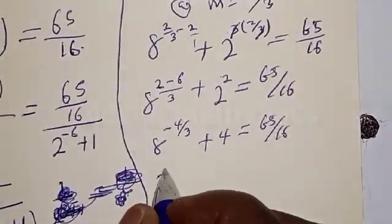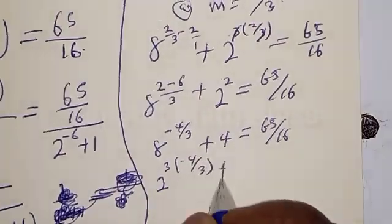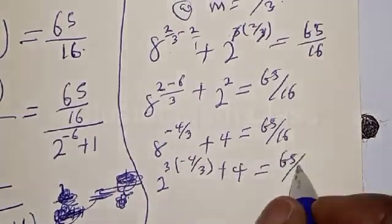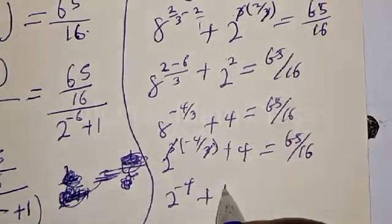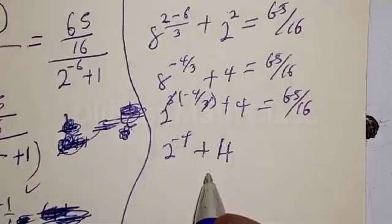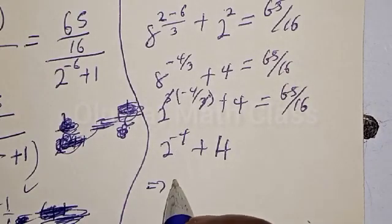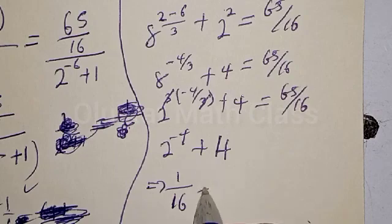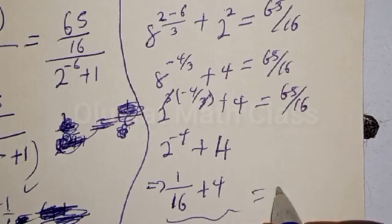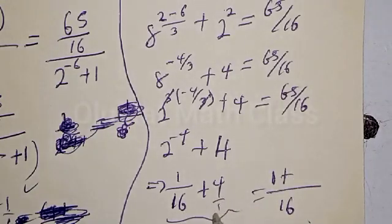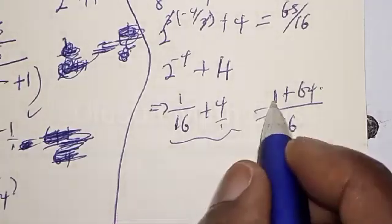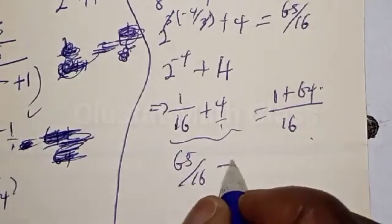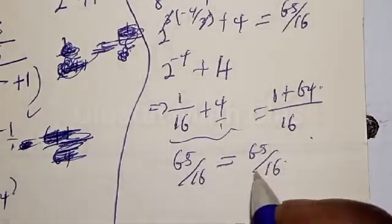Then we have 2 raised to power 3 times minus 4 over 3 plus 4, equal to 65 over 16. The 3 and 3 cancel, giving 2 raised to power minus 4 plus 4. This means 2 raised to power minus 4 is 1 over 16, plus 4. Finding the common denominator of 16: we get 1 over 16 plus 64 over 16, that is 1 plus 64 equals 65 over 16, which equals 65 over 16. This satisfies the given equation.